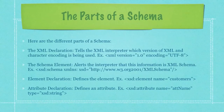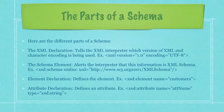Here are the different parts of a schema. The XML declaration tells the XML interpreter which version of XML and character encoding is being used. The schema element alerts the interpreter that this information is XML schema. The element declaration defines the element, and you can see an example here. The attribute declaration defines an attribute — you can see how I'm defining the attribute name as a string.